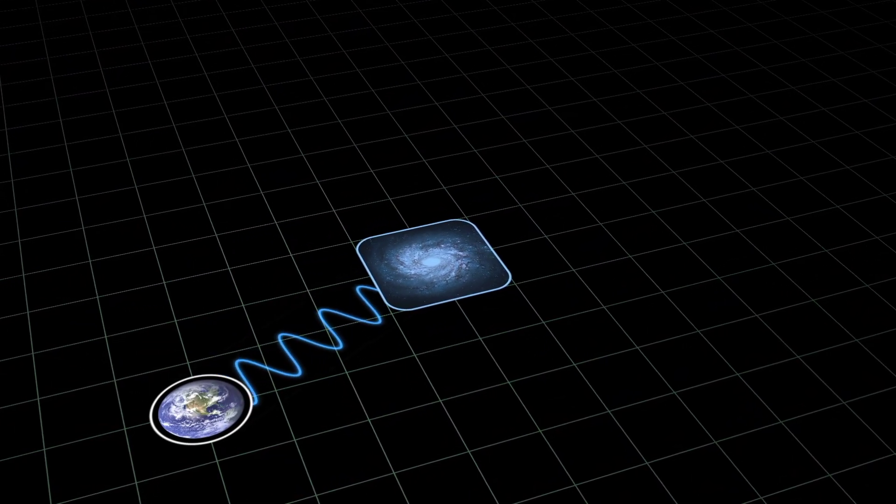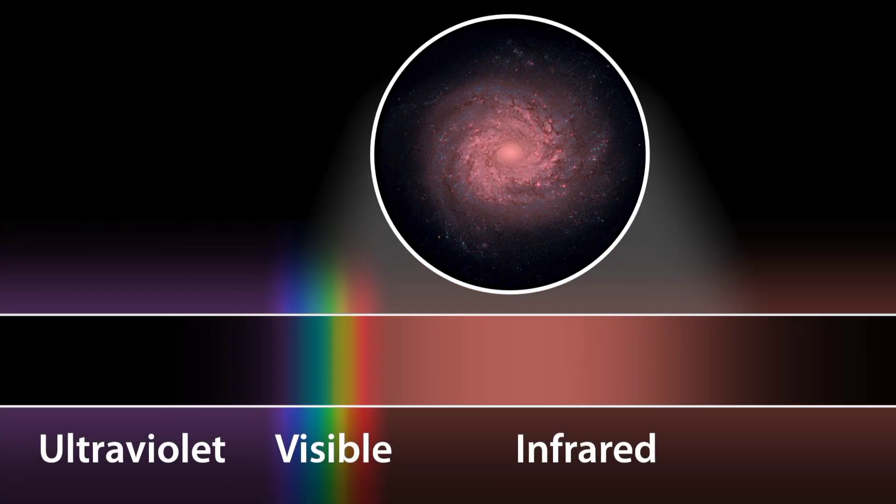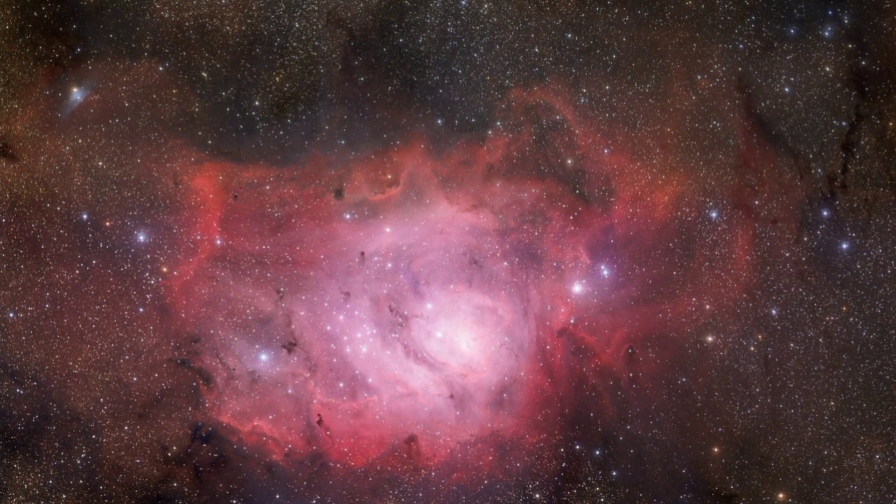The redshift happens when light from something moving away from us travels through space and stretches out, making it look redder. By checking this redshift, we can tell how old the universe is.